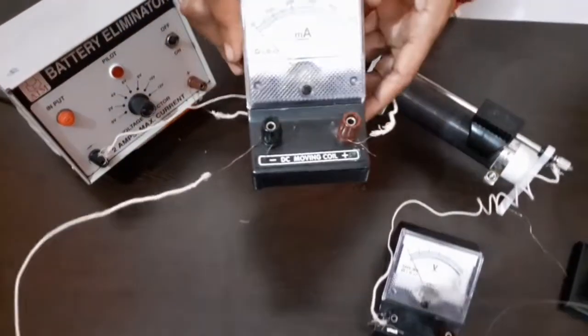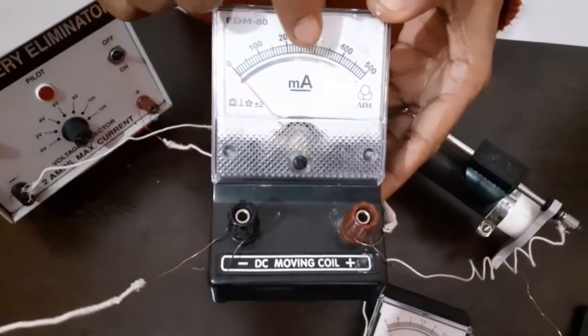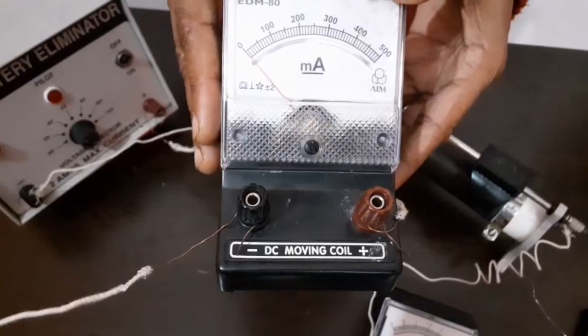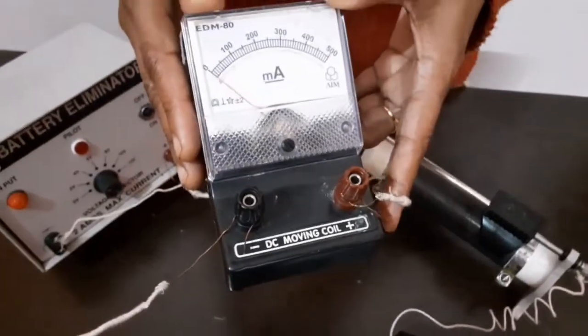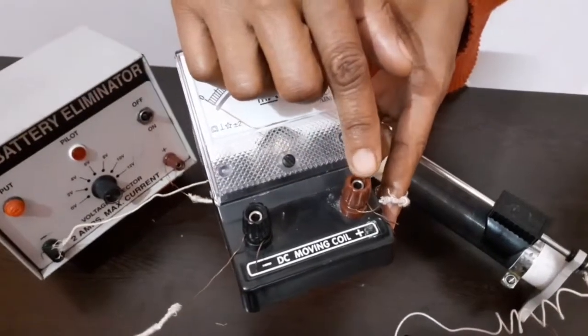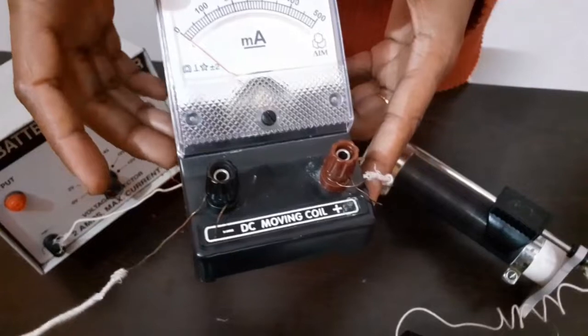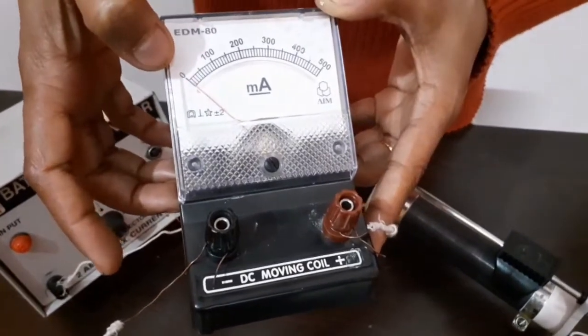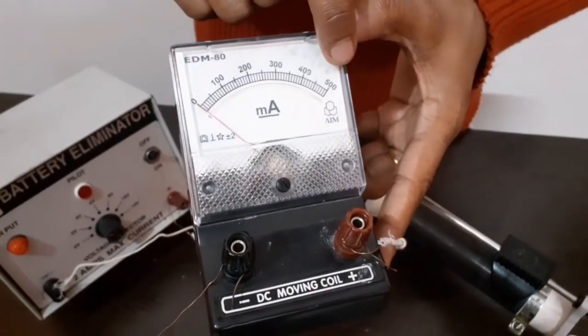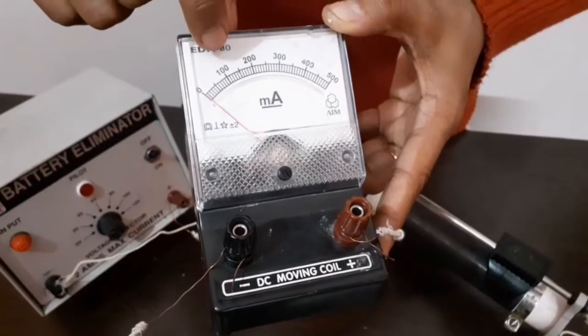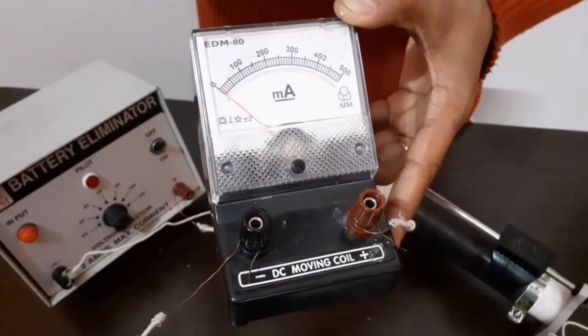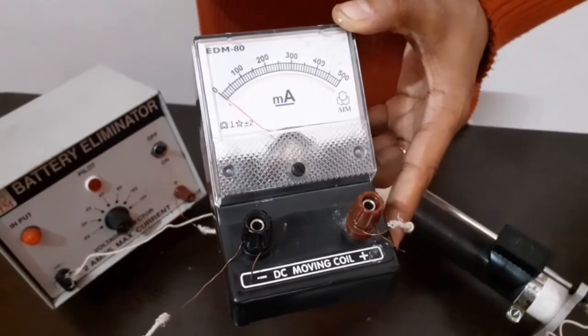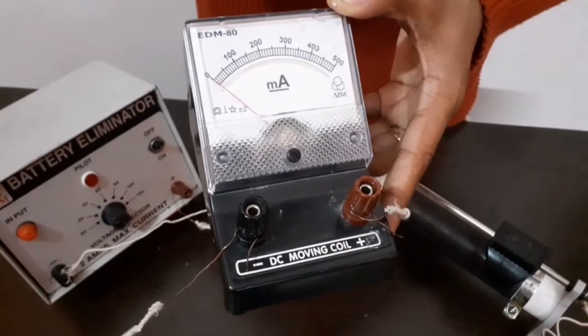We begin with this. As you can see small mA, this is a milliammeter which measures the current in milliamperes. It is a device with two terminals, positive and negative. It has a range of 0 to 500 milliamperes. Till here, it is 100 milliamperes and it has 10 divisions into it. It means that each division will have the value of 10 milliamperes.